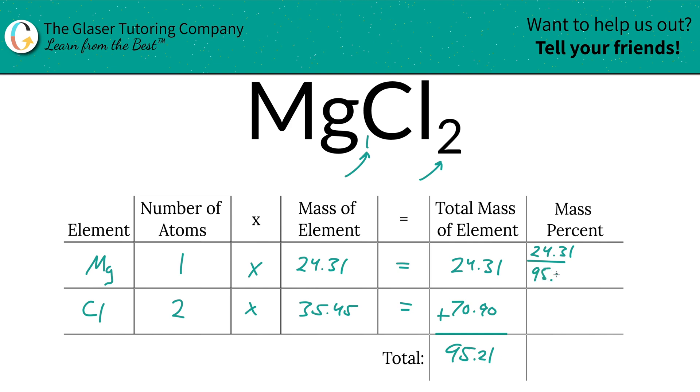Don't worry about the units because they're going to cancel, but when we get this fraction we've got to multiply it by 100 to get it into a percent. That's simply going to be 25.53 percent, and that's all there is to it.